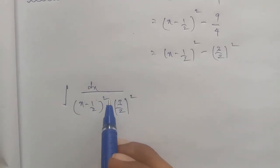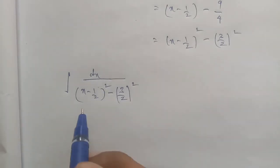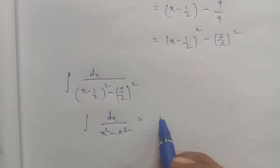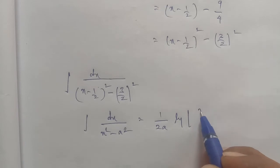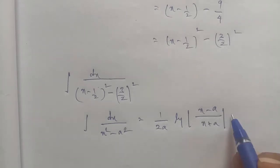Now, this is the direct formula. The formula is: integral dx by (x square minus a square) equals 1 by 2a log of (x minus a) by (x plus a), plus constant c.